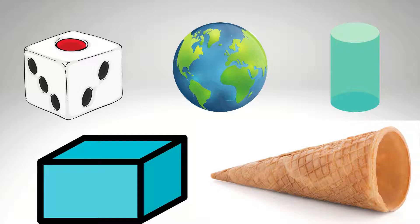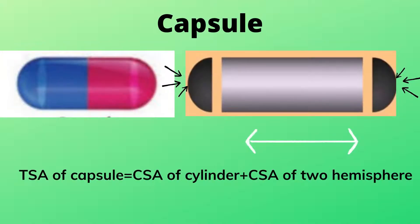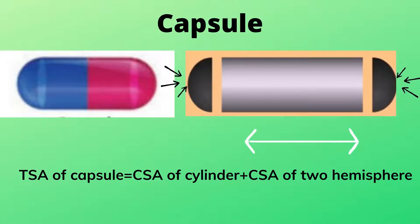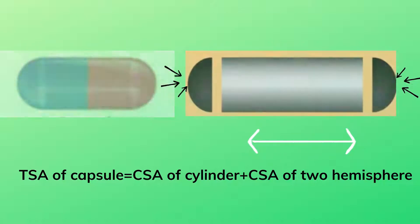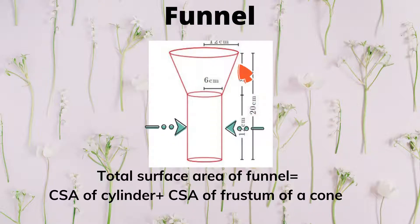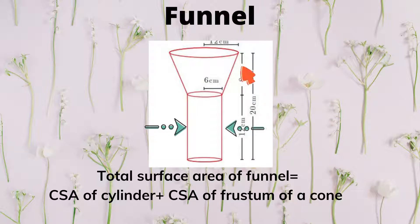You are familiar with fundamental shapes like cube, cuboid, sphere, cylinder, and cone. Look at the figure of a capsule — it is made up of a cylinder and two hemispheres. So the total surface area of a capsule is equal to the curved surface area of the cylinder plus the curved surface area of the two hemispheres.